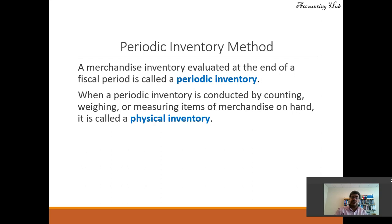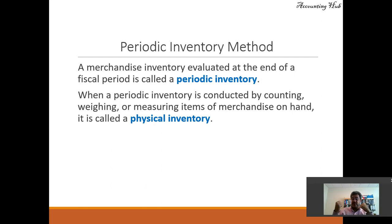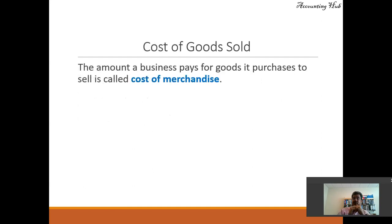A merchandise inventory evaluated at the end of a fiscal year is called a periodic inventory. When a periodic inventory is conducted by counting, weighing, or measuring items of merchandise on hand, it is called a physical inventory. We have our beginning inventory, our purchases, then we find the physical ending inventory, measured in US dollars. The cost of goods sold — the amount a business paid for goods purchased to sell — is found by difference.